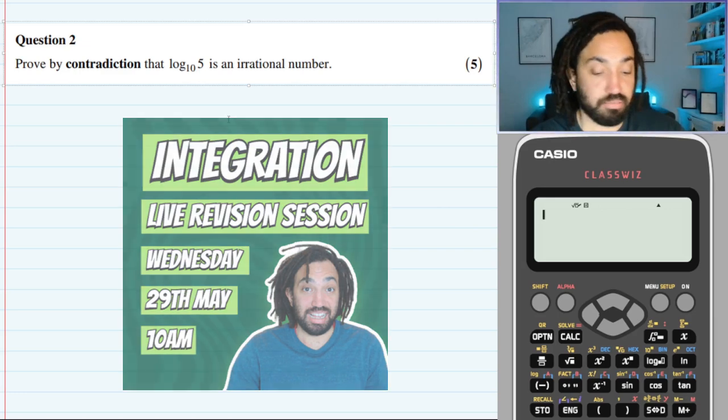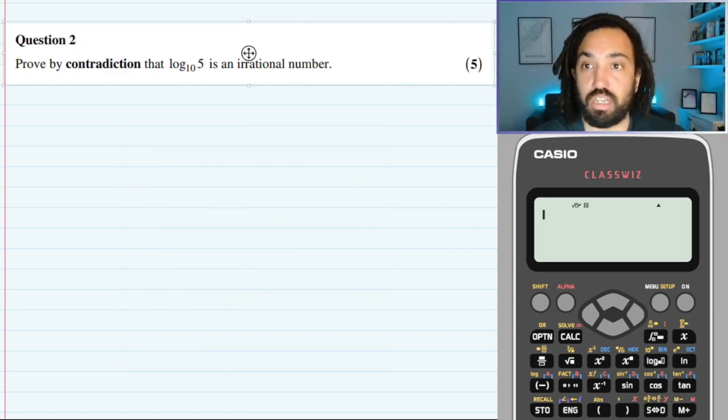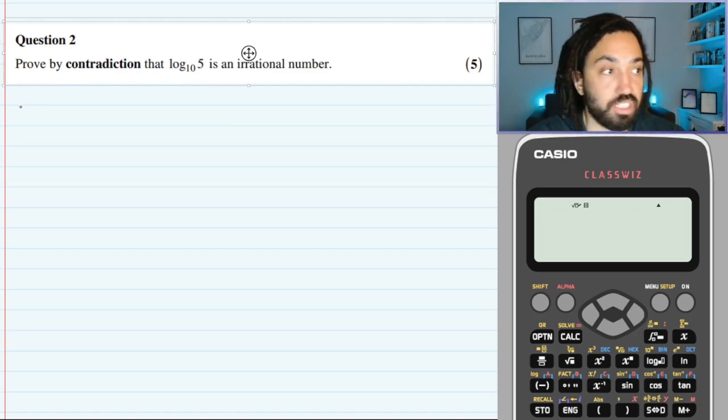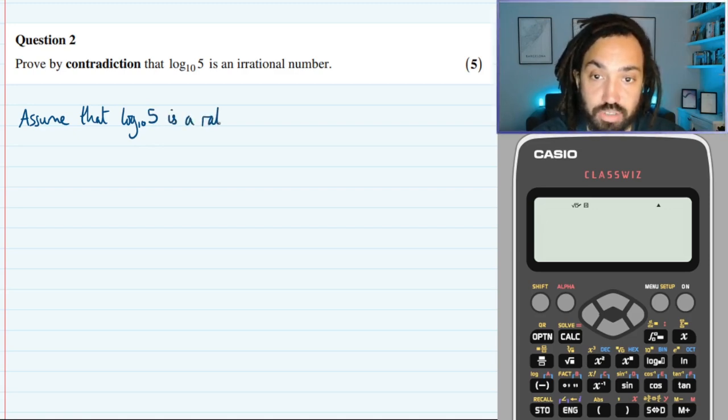Okay right, proof by contradiction that log base 10 of 5 is an irrational number. So any proof by contradiction, we must state that we're going to assume the negation of that, the opposite. So I'm going to assume that log base 10 of 5 is a rational number.